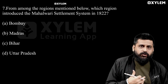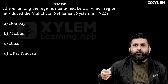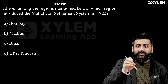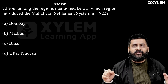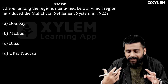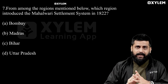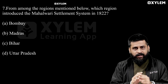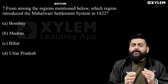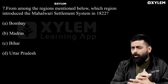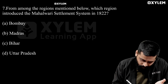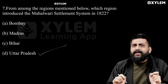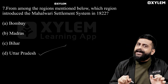Next question: from among the regions mentioned below, which region introduced the Mahalwari system in 1822? Options are: Bombay, Madras, Bihar, Uttar Pradesh. The right answer is that the Mahalwari settlement in 1822 was introduced in that region — Bihar is the right answer.